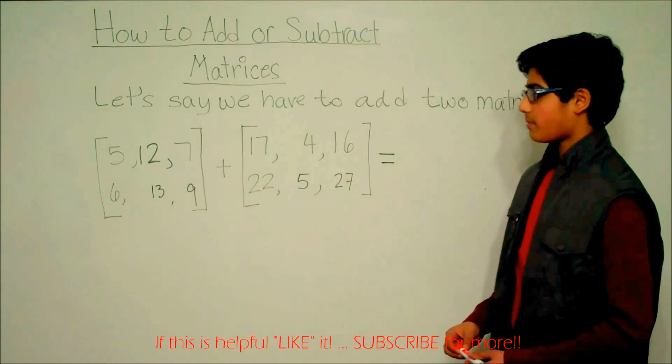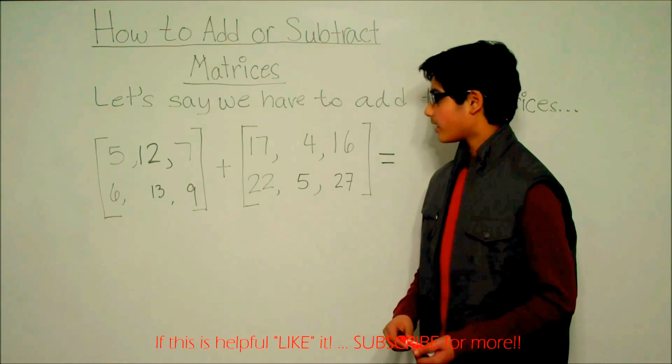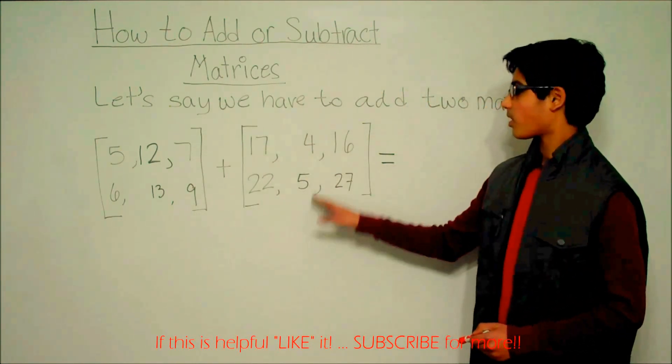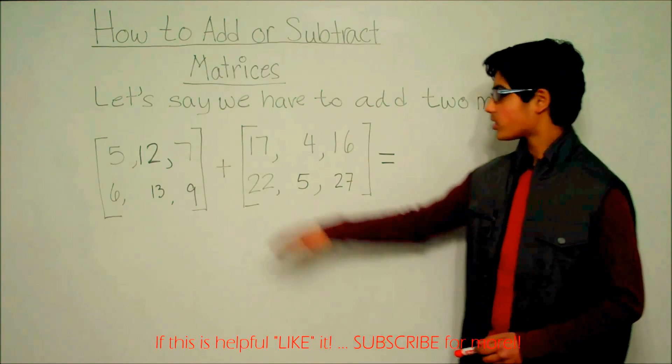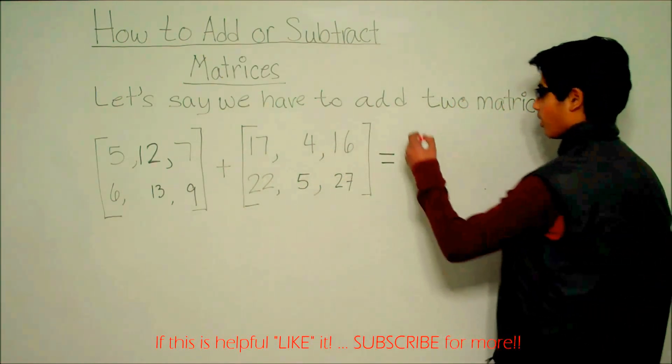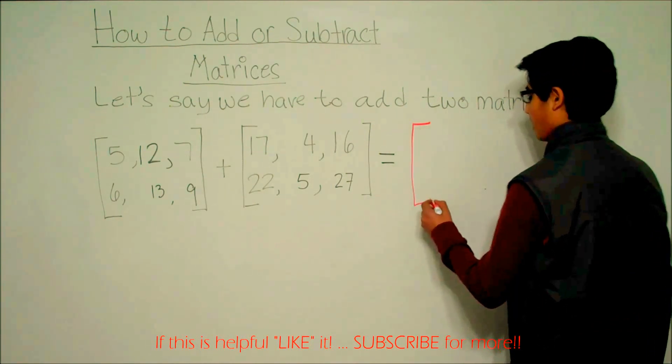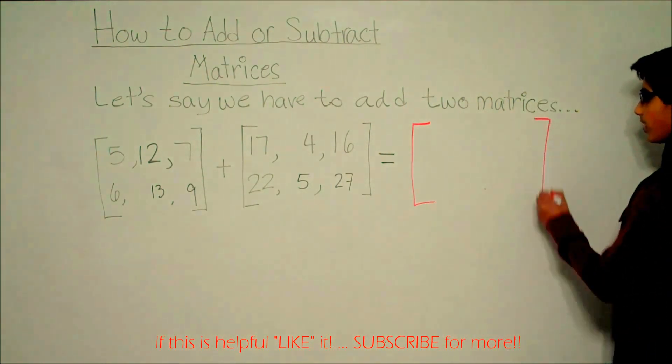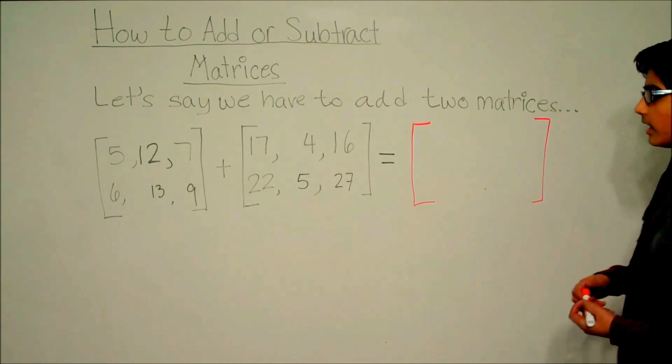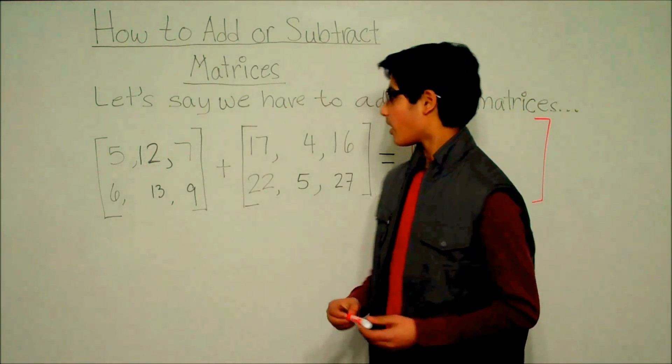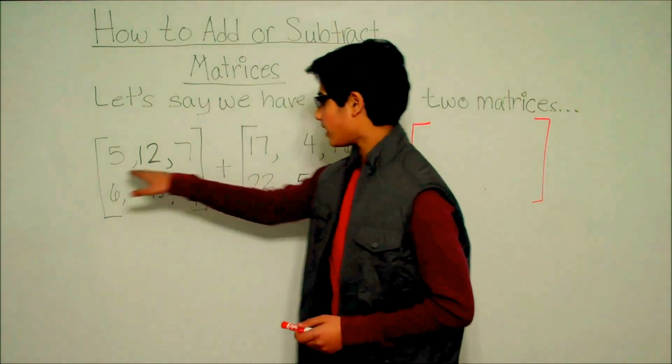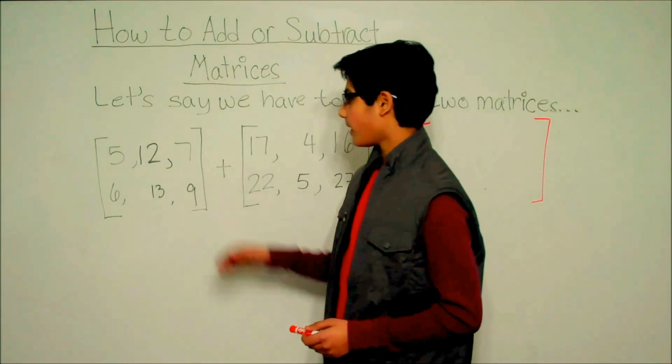Now, because both these matrices are in the format of three columns - column 1, column 2, column 3 - and two rows - row 1 and row 2 - the answer will also be in a matrix of three columns to two rows. When we are adding matrices, we're simply adding each corresponding number in each matrix.